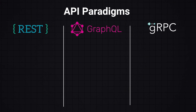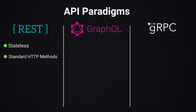APIs come in different paradigms, each with its own set of protocols and standards. The most common one is REST, which stands for Representational State Transfer. It is stateless, meaning each request from a client to a server must contain all the information needed to complete the request. It uses standard HTTP methods — GET, POST, PUT, and DELETE — and it's easily consumable by different clients like browsers or mobile apps. The downside of RESTful APIs is that they can lead to overfetching or underfetching of data, and more endpoints may be required to access specific data. RESTful APIs typically use JSON for data exchange.